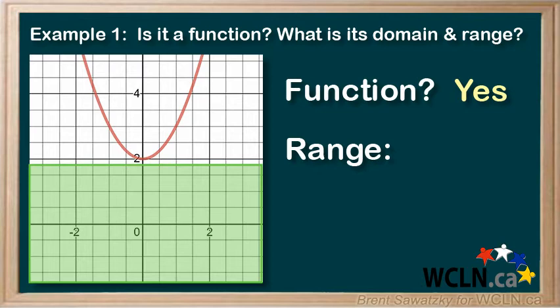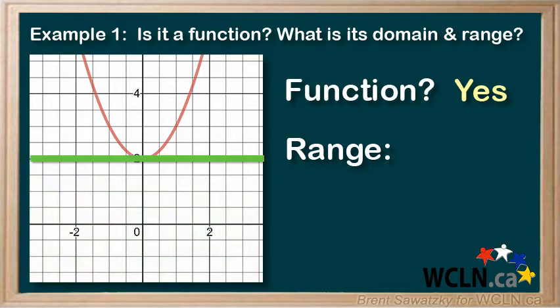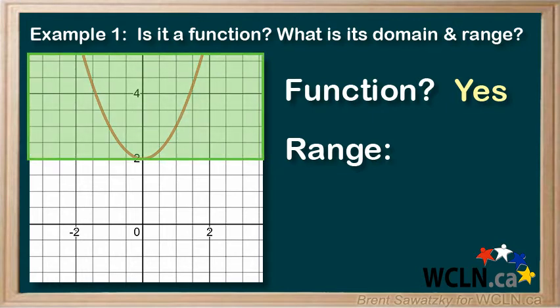But at Y equals 2, we see that our relationship starts to take on values. So Y equals 2 is a part of the range. And we can see that all of the Ys above Y equals 2 are also represented by this function. So we'd say that the range includes all Y values that are equal or greater than 2. So we've identified the range.